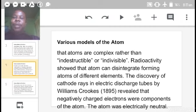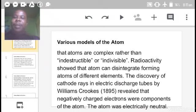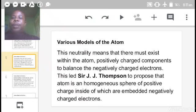The discovery of radioactivity by Becquerel made the atom look complex rather than indestructible or indivisible. This radioactivity showed that atoms can disintegrate into different elements. This discovery of cathode rays in electric discharge tubes by William Crookes revealed that negatively charged electrons were components of the atom, countering what Dalton said.